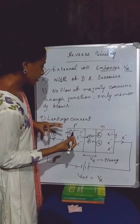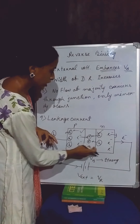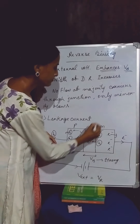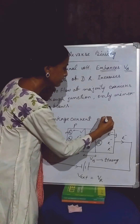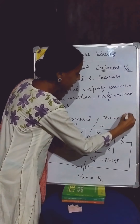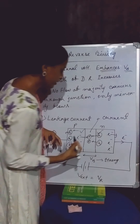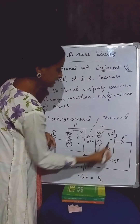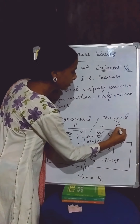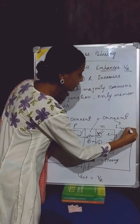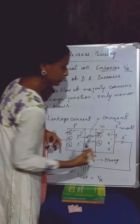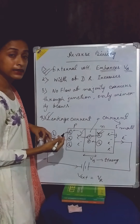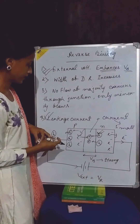That's why, due to the movement of minority carriers through the junction, we will get a current. But this current is produced by minority carriers, so the amount of this current will be very small. That's why this current is called leakage current.